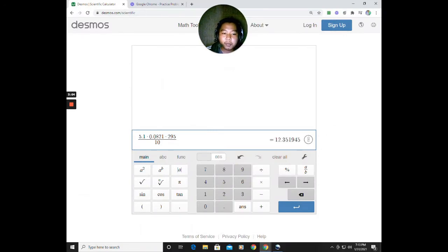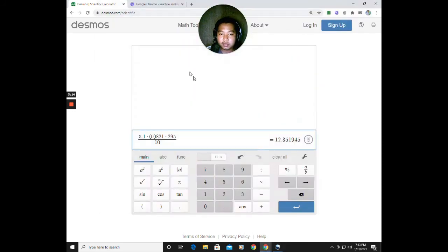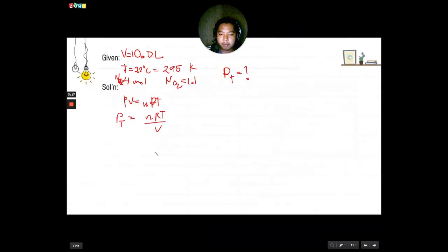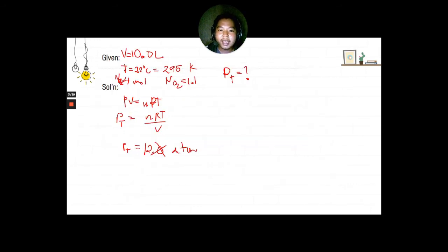That would give us a total pressure of 12.35. Now, significant figures is 2 so we can write it simply as 12 ATM. The total pressure is 12 ATM. Now, the total pressure of this scuba tank is 12 ATM.